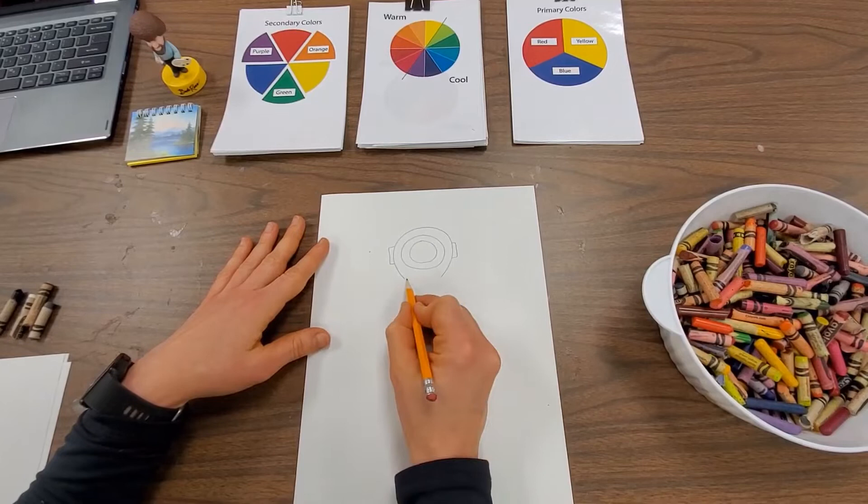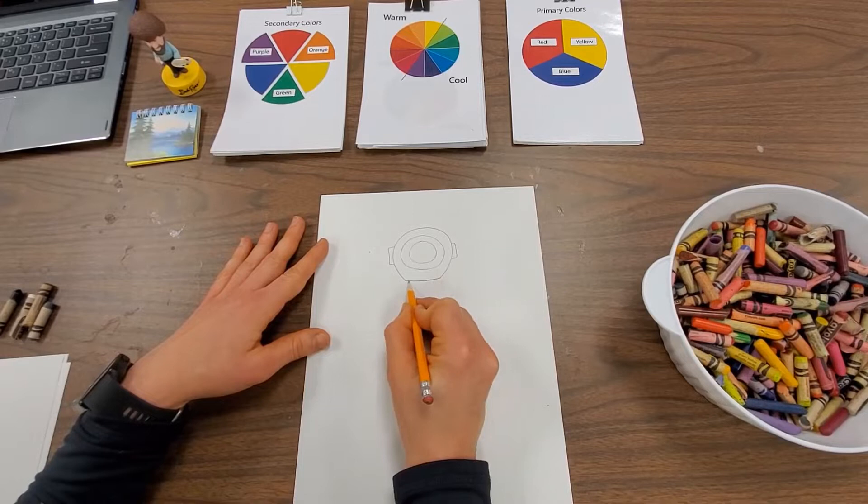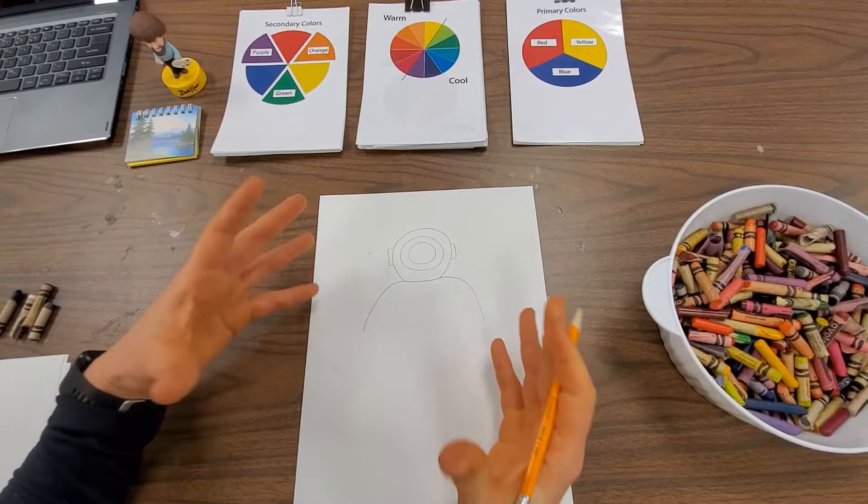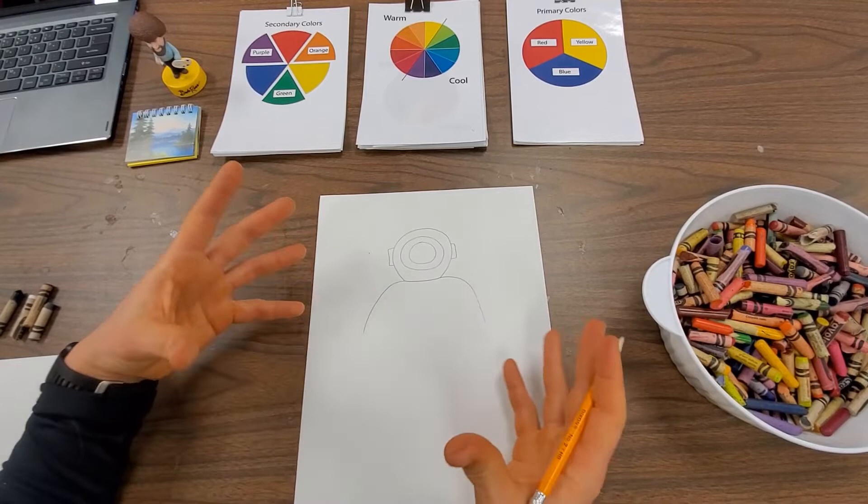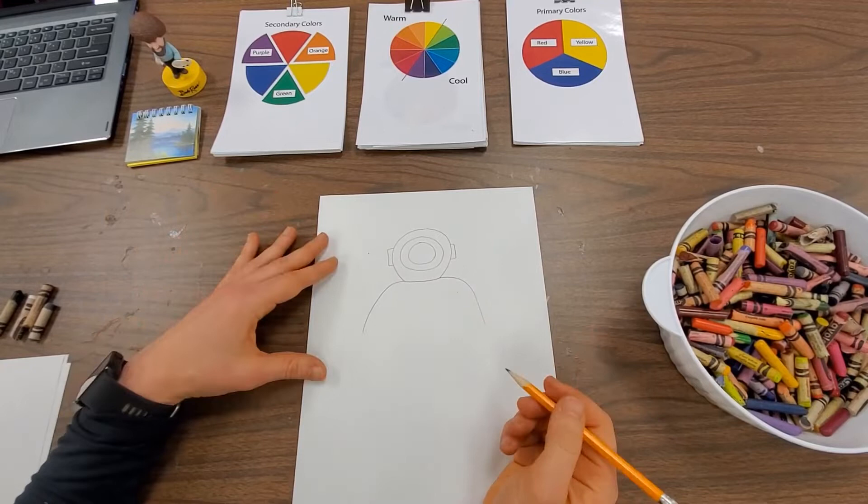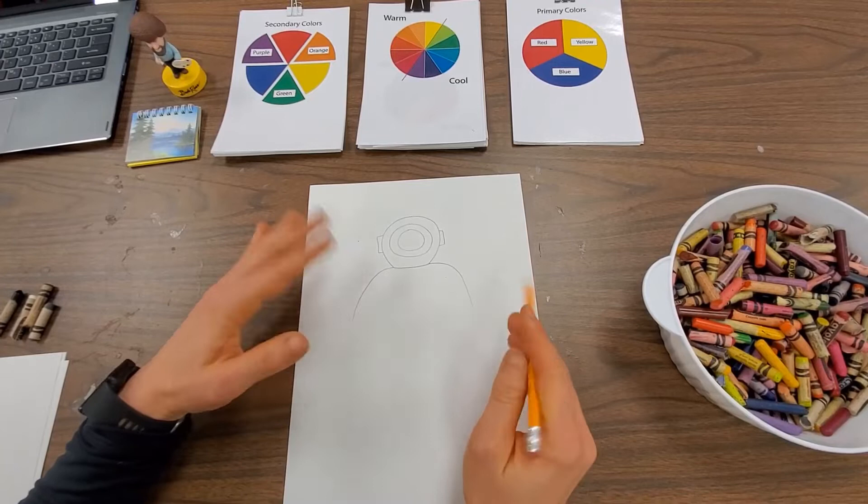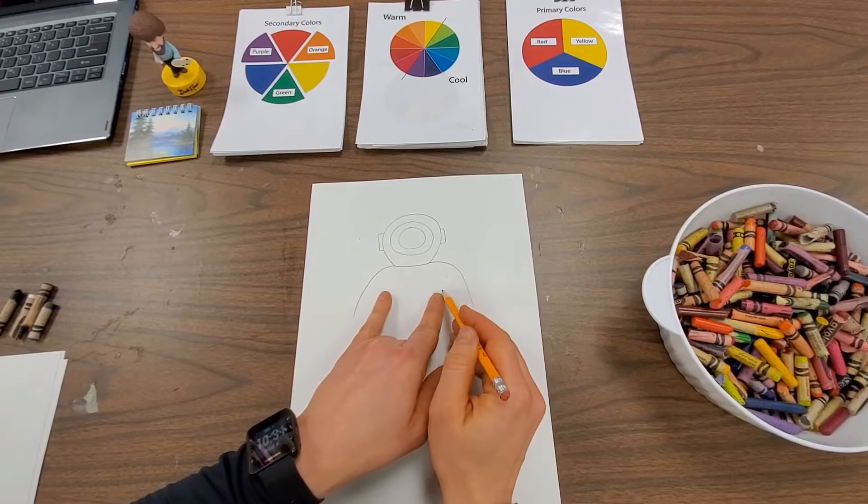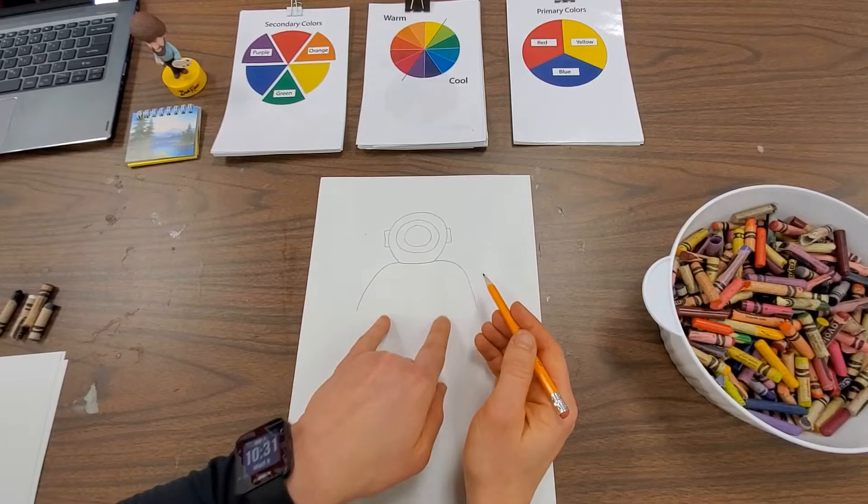Now what I'm going to do is draw the bottom where the helmet meets the rest of the suit. It's a slight curve. And then I can add some shoulders. Now the cool thing about these suits that makes it easy to draw is that they were really big and bulky. So if you draw a big bulky scuba suit, you're doing just fine.